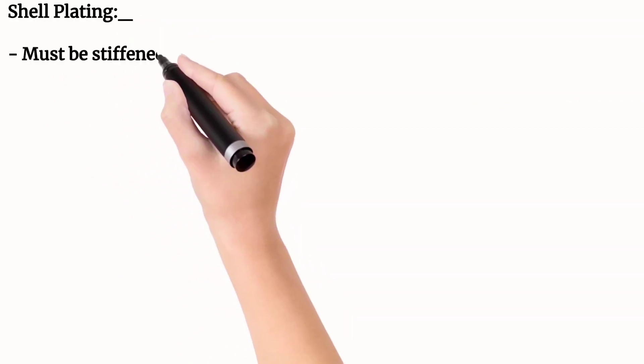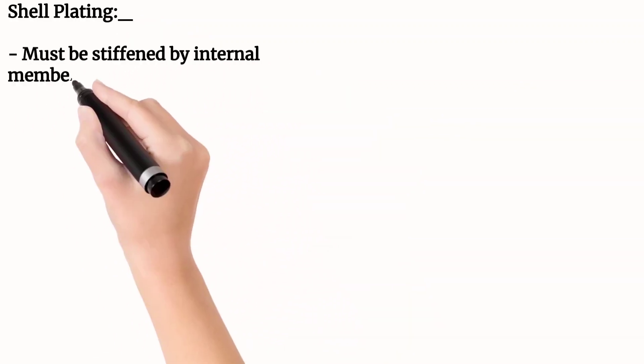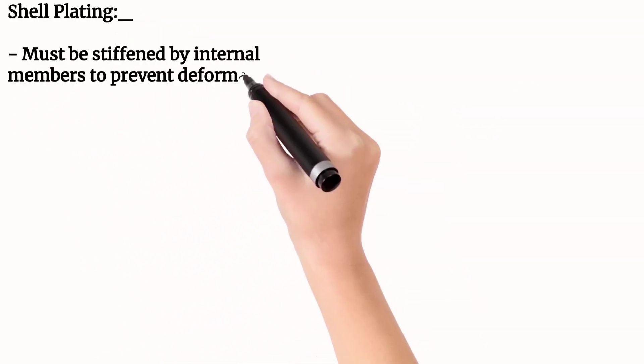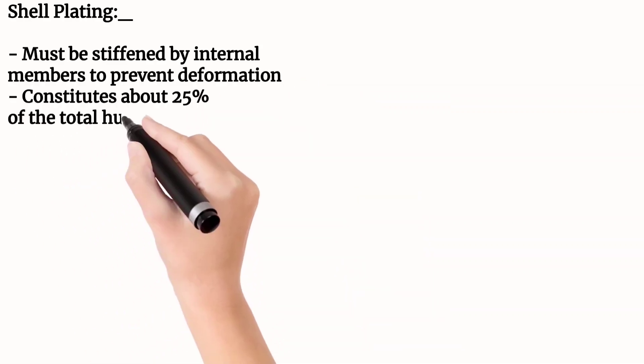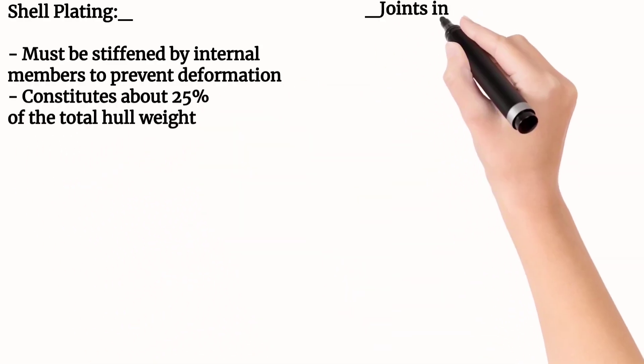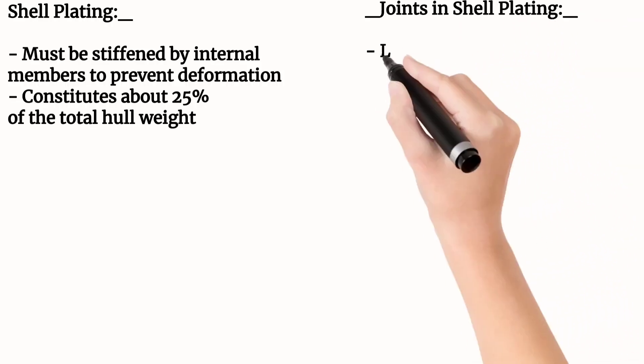Now let's see some important points about shell plating. The shell plating must be stiffened by internal members to prevent deformation. The shell plating constitutes about 25% of the total hull weight.